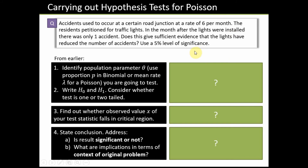The example says: accidents used to occur at a certain road junction at a rate of 6 per month. The residents petitioned for traffic lights. In the month after the lights were installed, there was only one accident. Does this give sufficient evidence that the lights have reduced the number of accidents? Use a 5% level of significance.